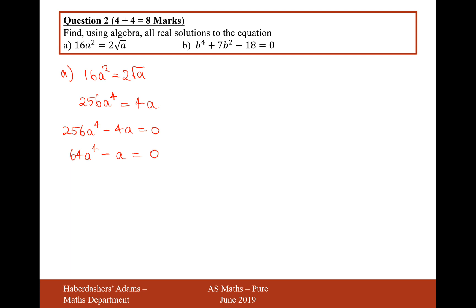You can divide by 4 at this point if you wish. That would give 64a to the power of 4 minus a equals 0. Now we'll factorize out an a, giving a times 64a to the power of 3 minus 1, because we've pulled out a factor of a.